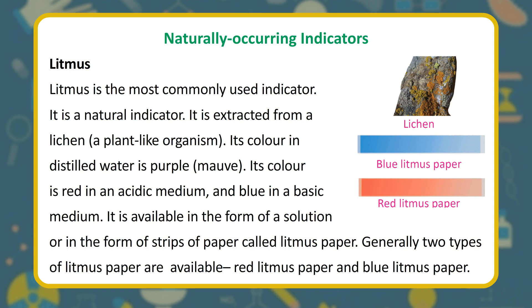Litmus is the most commonly used indicator. It is a natural indicator extracted from a lichen, a plant-like organism. Its color in distilled water is purple (mauve). Its color is red in an acidic medium and blue in a basic medium. It is available as a solution or as strips of paper called litmus paper — red litmus paper and blue litmus paper.